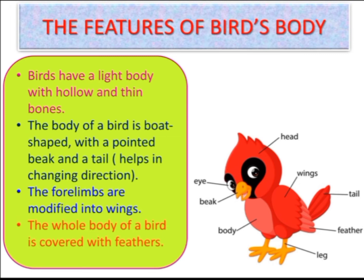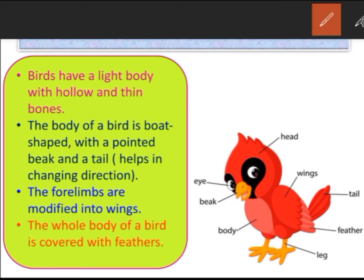Here you can see in the picture some body parts of the bird. A bird's whole body is divided into three parts: head, tail, and body. Now here we have the head, these are wings, this is the tail, then feathers, leg, beak, and eyes.